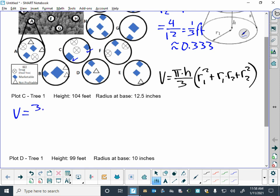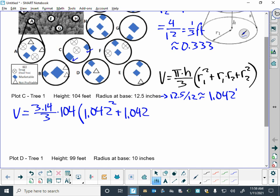So our first one is going to be pi, which we'll use about 3.14 for that, divided by 3, times the height of this first tree which is 104 feet. Now our radius at the base here, we're going to have to change that into feet, so we'll take the 12.5 and divide by 12 inches in a foot, which gives us about 1.04 for the r1. So we're going to take that 1.042 and square it, and then we will add on the 1.042 times the r2, which is the 0.333, plus the 0.333 squared.